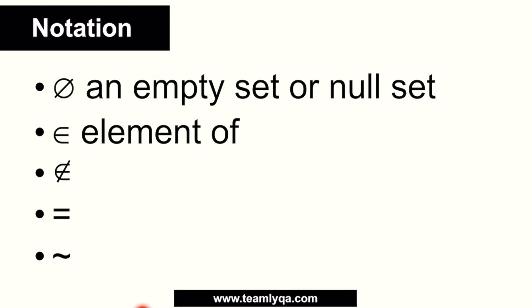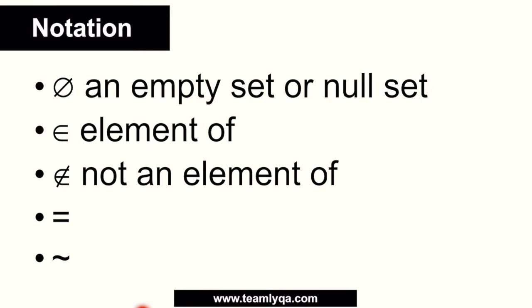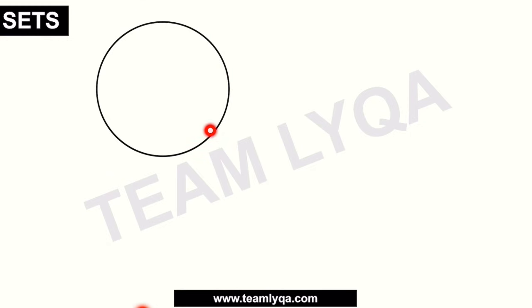So if a number, a shape, something you wear, or an animal is part of a set, it is an element of that set. Now, looking at the drawing here: if set A has an open bracket with nothing inside, then set A is a null set or empty set. But if we look at set B, which contains the numbers 1, 2, 3, 4, and 5, those are the elements of set B. It's worth noting that writing elements in order doesn't mean all sets must be in order — I just like writing them clearly that way.